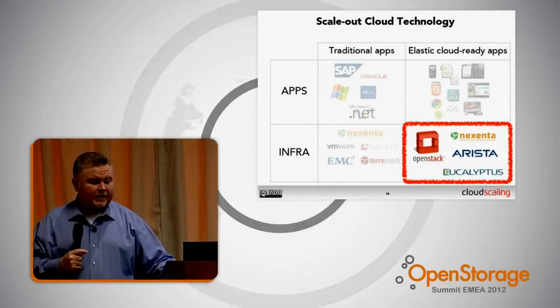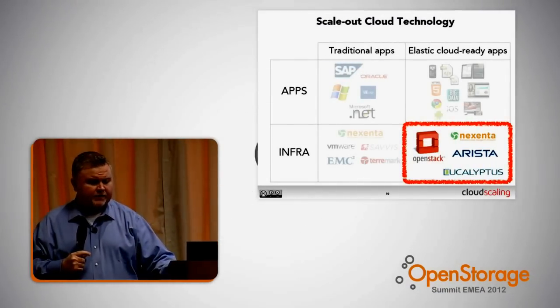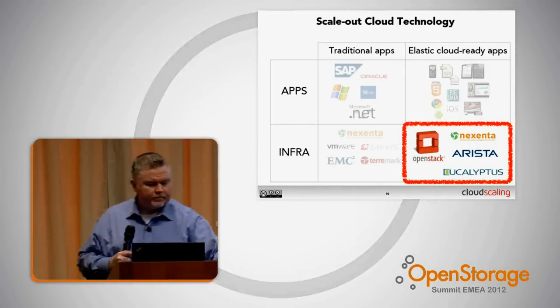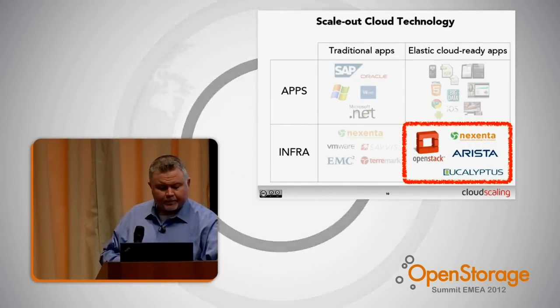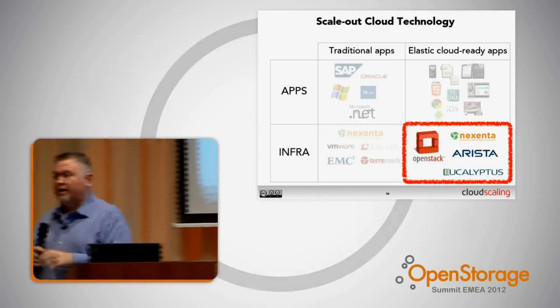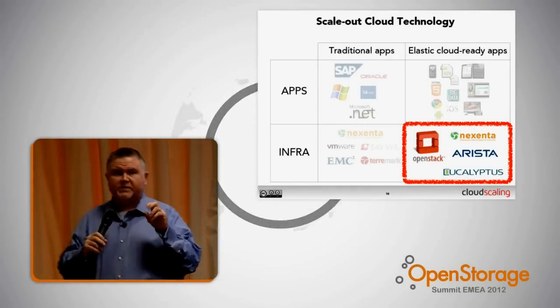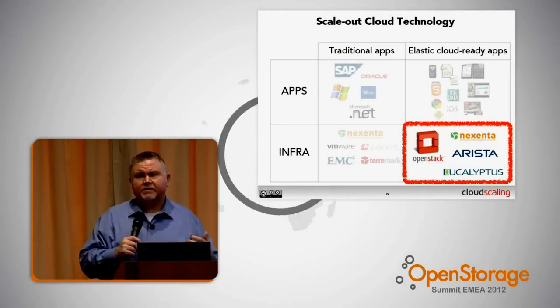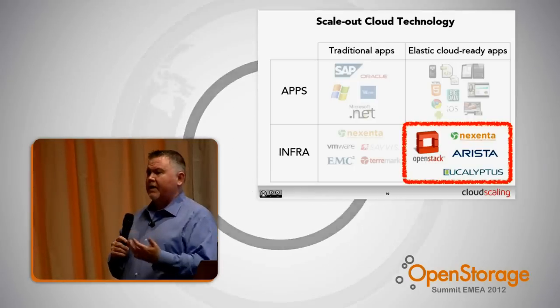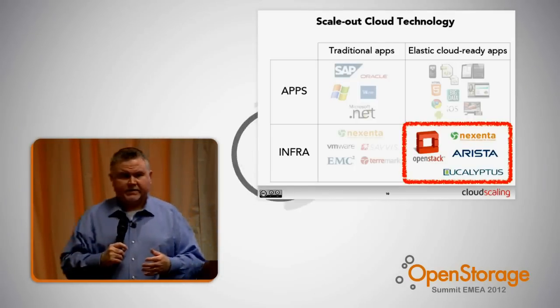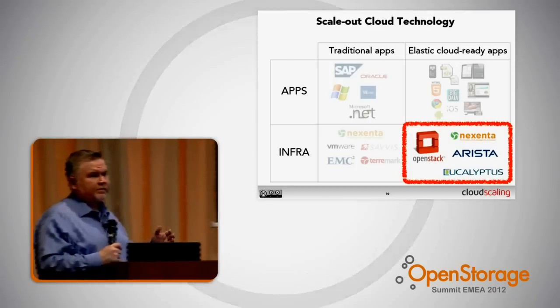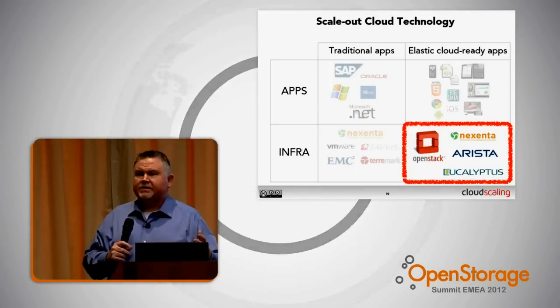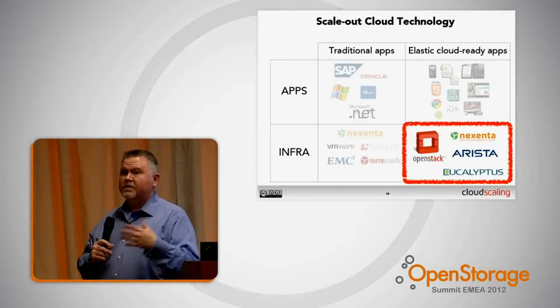Public providers are the ones that have been successful so far in doing that. While a lot of this has really started in the public cloud space, a lot of those technologies that allow building scale-out clouds and supporting scale-out applications are now available. Folks like Nexenta, technologies like OpenStack, Arista, and Eucalyptus — a lot of these open source or more open systems are focused on, or at least partially focused on, these scale-out applications and next-generation infrastructure.